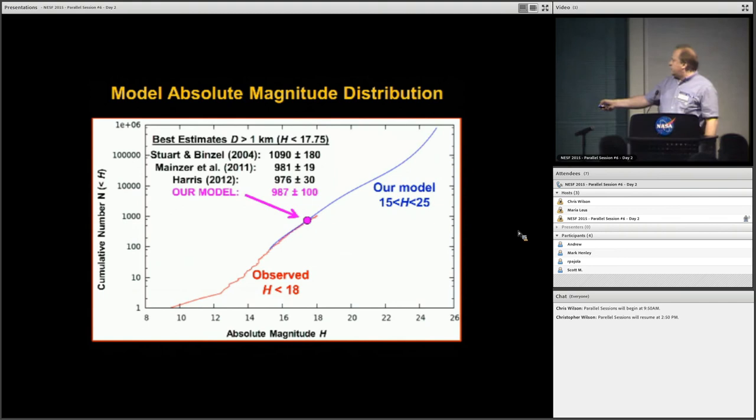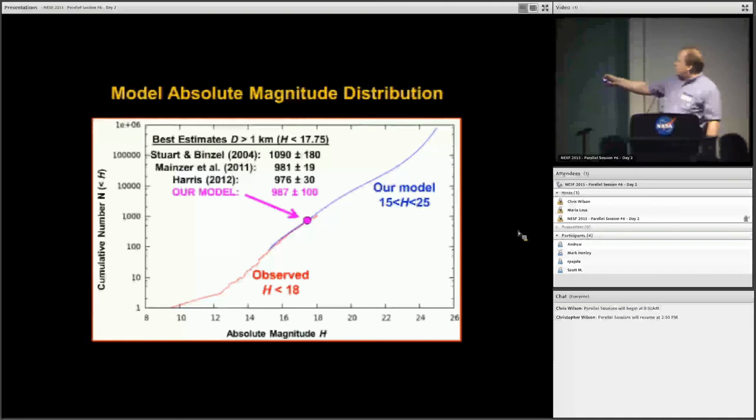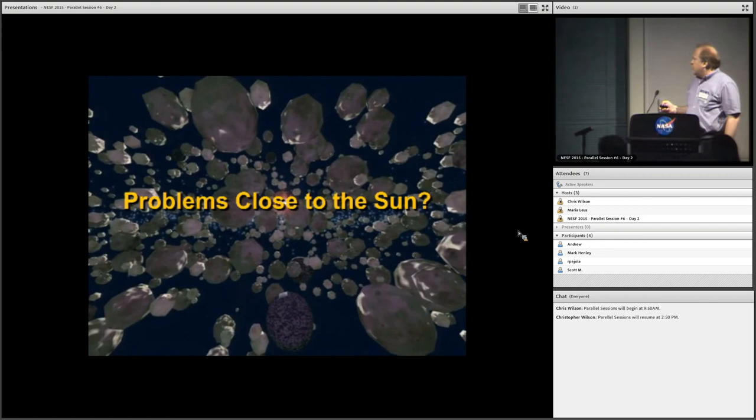Just for reference, this is absolute magnitude. Our model predicts there's about a thousand kilometer-size near-Earth objects. That's pretty close to what other people have gotten as well. We also predict the near-Earth object population has a wavy shape, and this is something that Al Harris and others have done for a while. So we're all pretty consistent. That's a great story so far. But it's not as interesting as one would like.